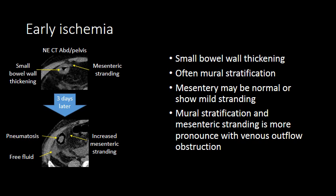As ischemia progresses from early to late, the bowel wall will often thin, become non-enhancing, and pneumatosis can develop. You may often see increased mesenteric stranding and free fluid. This case on the left-hand side of your screen shows a person who initially had small bowel wall thickening that progressed to small bowel wall thinning with pneumatosis.